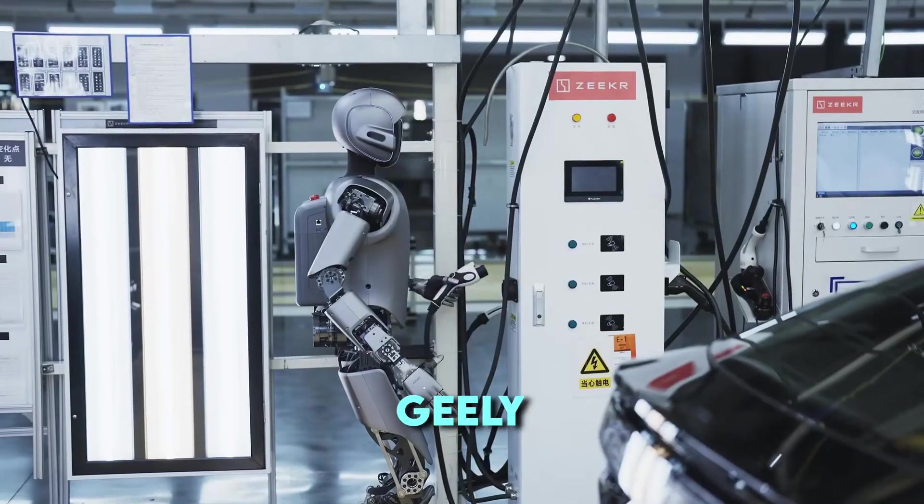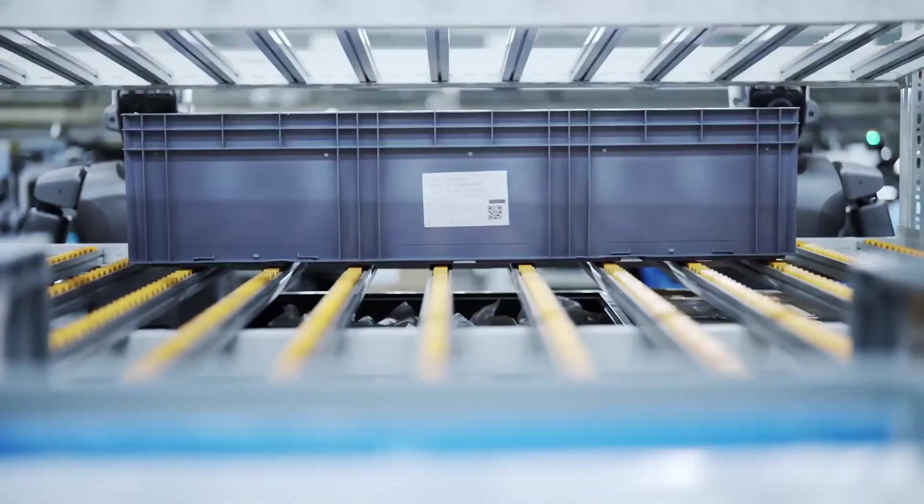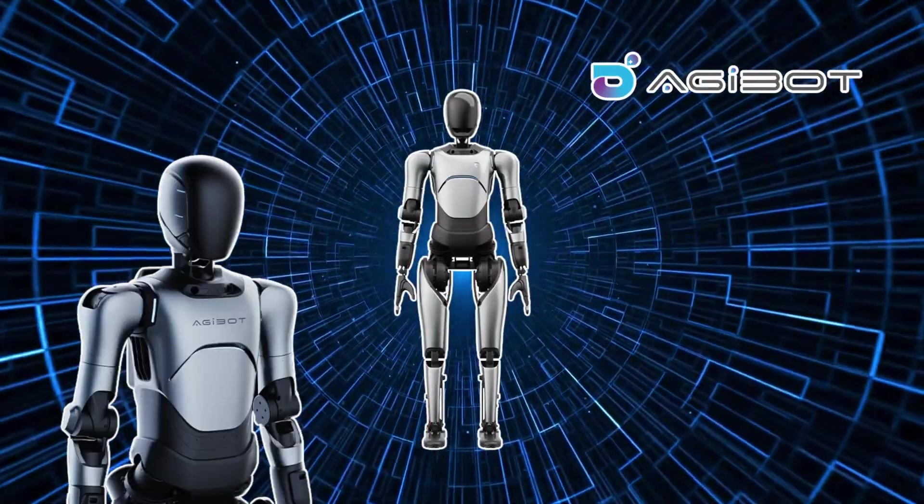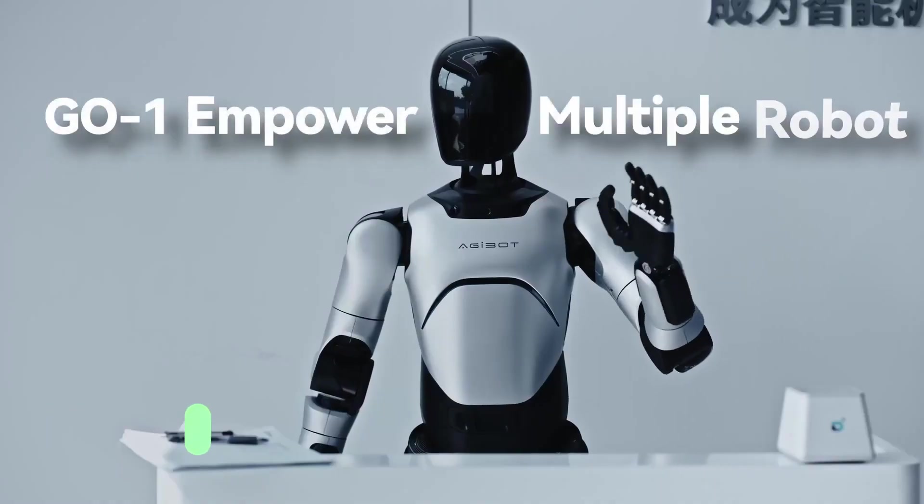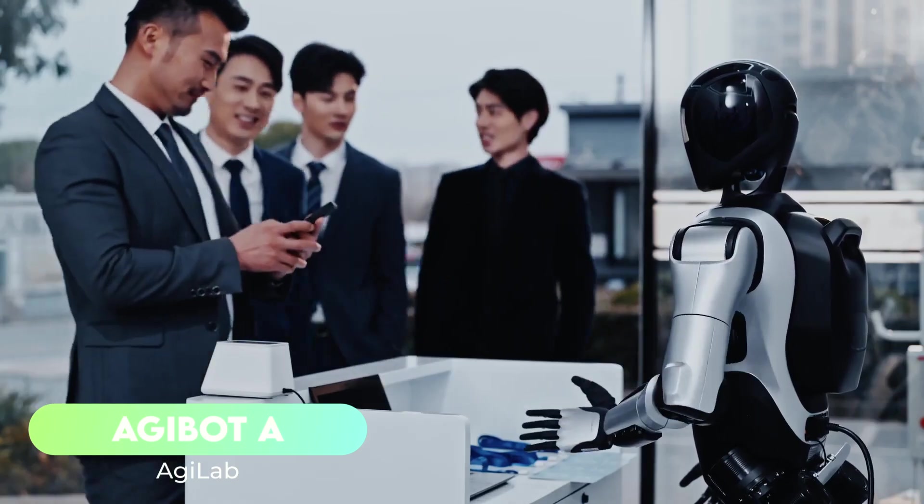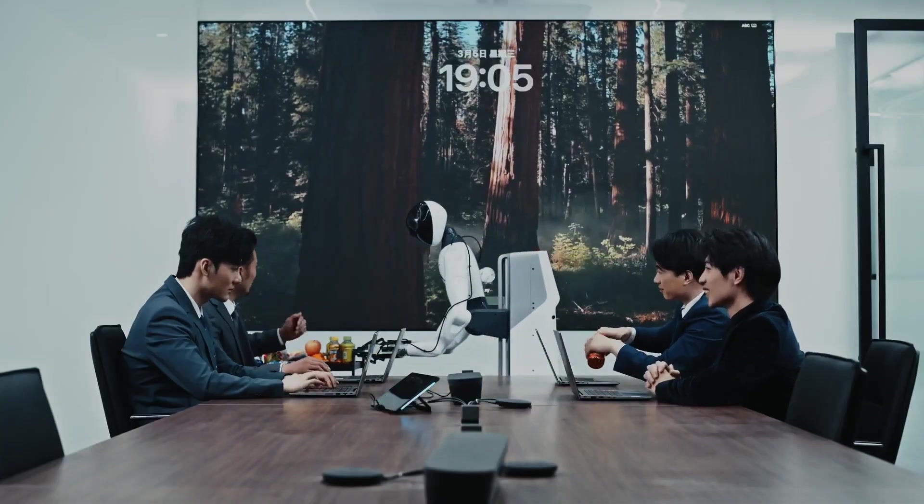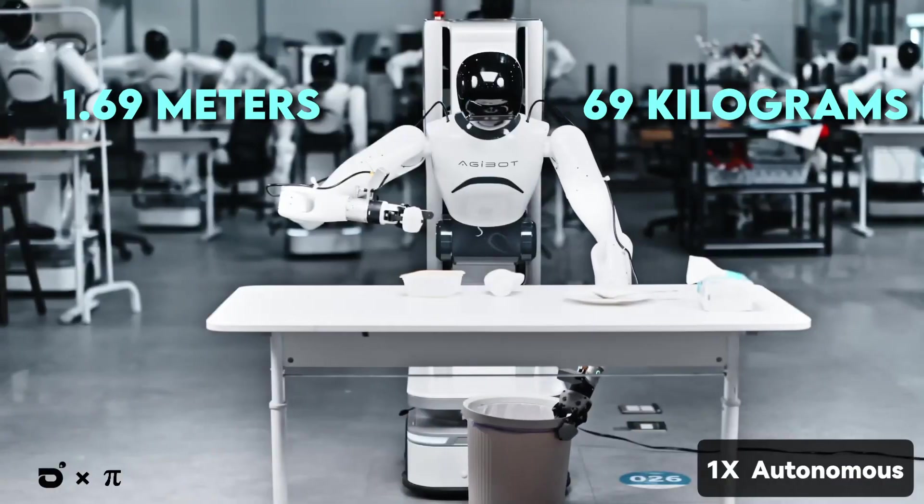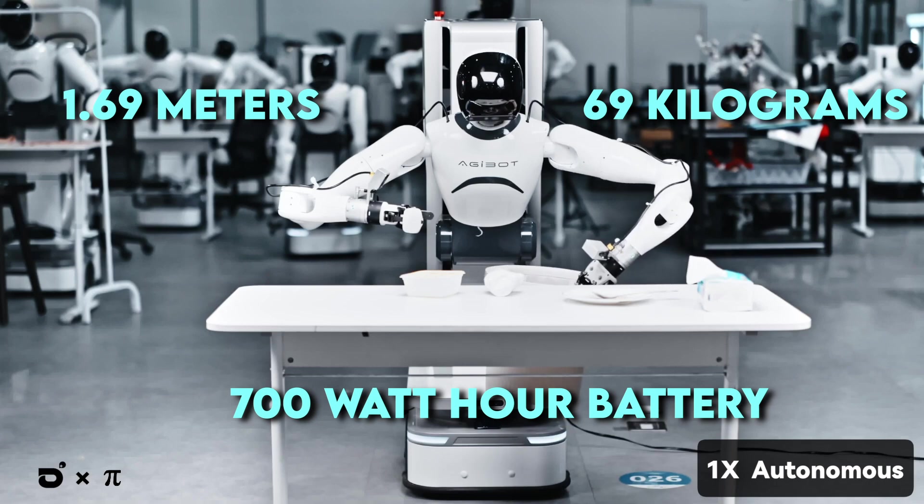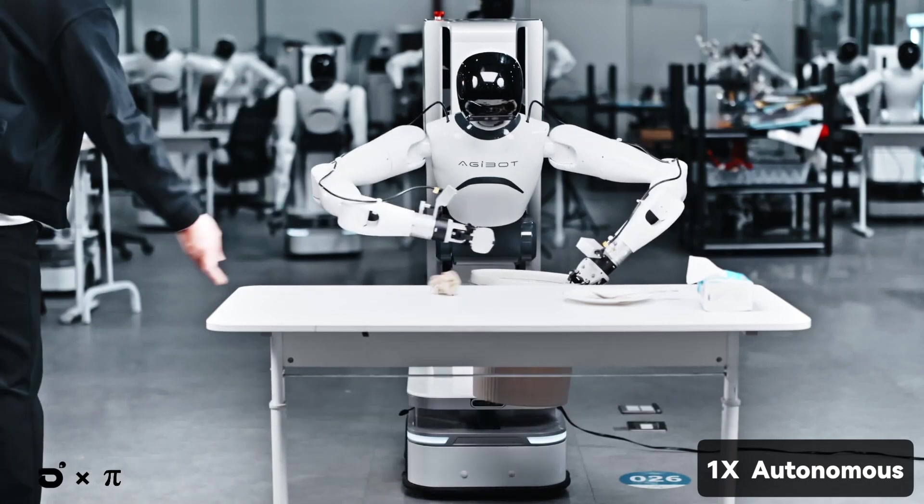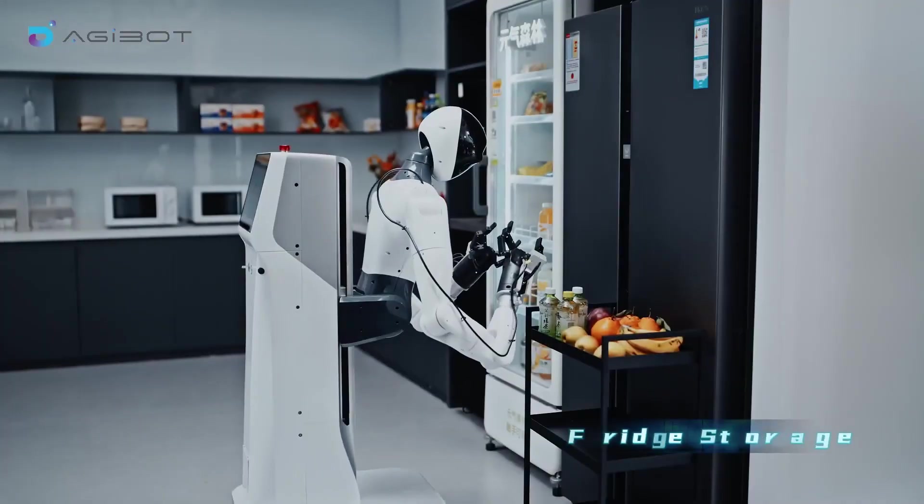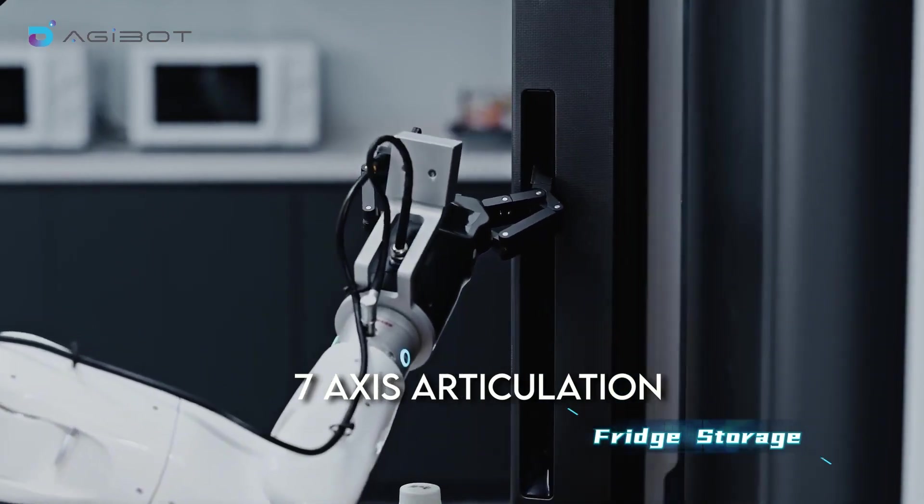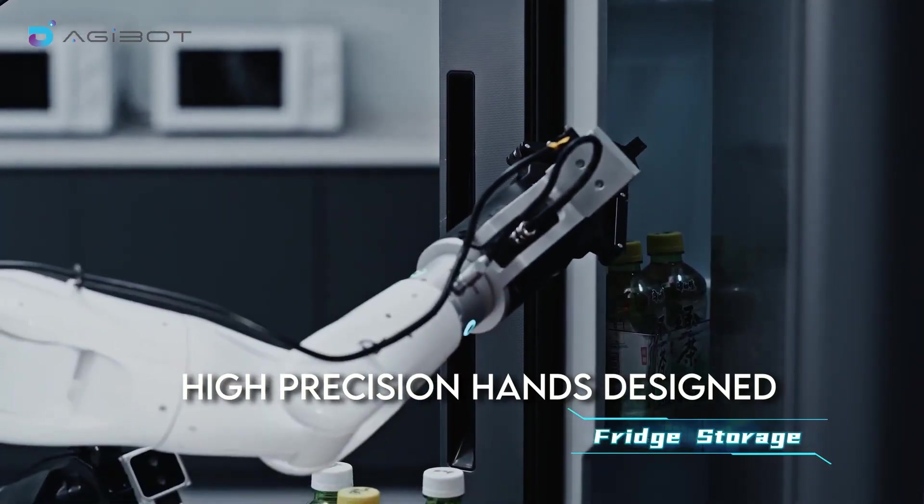Number 1: Agibot A2 by AGI Lab. Shanghai-based startup AGI Lab revealed the Agibot A2 in 2024, a general-purpose humanoid aimed at navigating complex indoor environments. Standing 1.69 meters tall and weighing 69 kilograms, it runs on a 700 watt-hour battery with hot swap functionality, giving it roughly two hours of working time. Agibot A2 features over 40 degrees of freedom, arms with seven-axis articulation, and high-precision hands designed for delicate handling. It is loaded with stereo cameras, lidar, and ultrasonic sensors to safely navigate crowded or cluttered spaces.